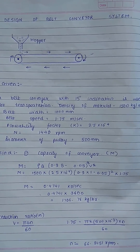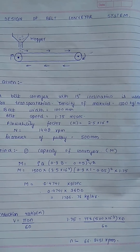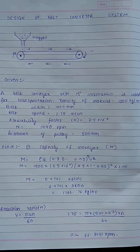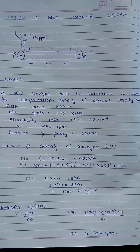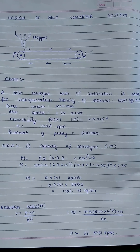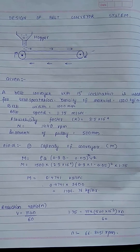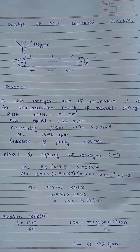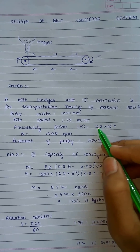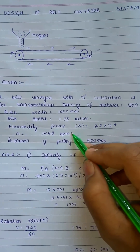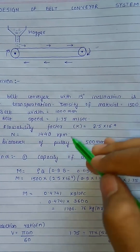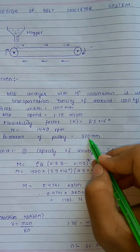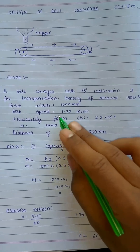The numericals in this subject are pretty easy and are only of three types, carrying maximum five elements to be found out. Let's start with the first numerical: a belt conveyor with 15 degree inclination is used for transportation. Density is given as 1500, belt width is 1000 mm, belt speed is 1.75 meter per second. We are also given k, the flowability factor of the material, the driving pulley rotation speed, and the diameter of the driving pulley at 500 mm.